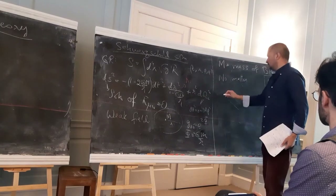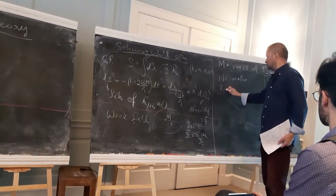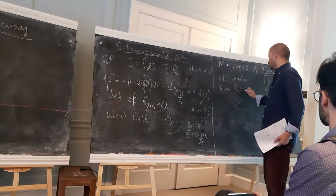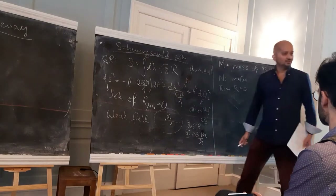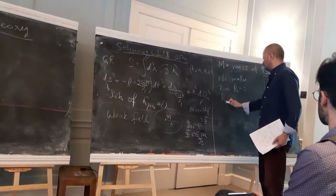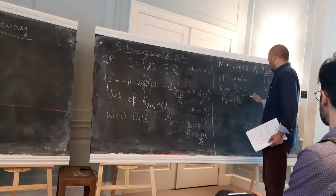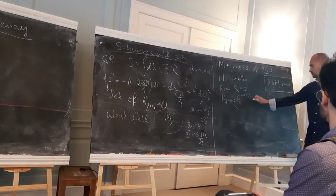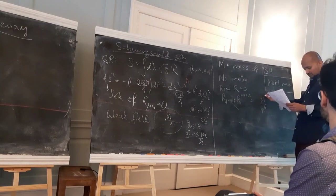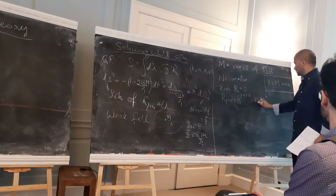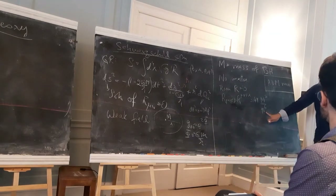Looking at this solution more carefully: it's a solution of the vacuum Einstein equations, so R_μν = 0 and the Ricci scalar is 0. Of course the Riemann tensor is not zero, otherwise you wouldn't have a nontrivial solution. The first nontrivial scalar you can make is the Kretschner scalar, which is proportional to 48M²/r⁶. You can see that r = 0 is a curvature singularity, but r = 2GM is not — it's perfectly well-behaved even though the metric components look singular there.